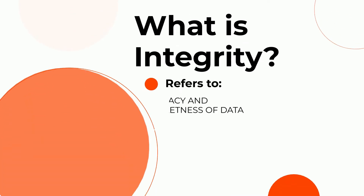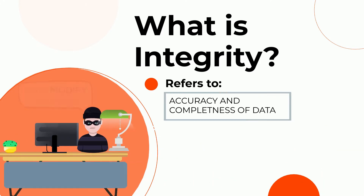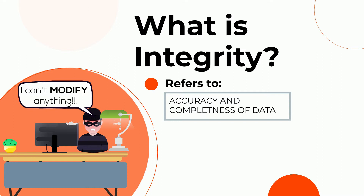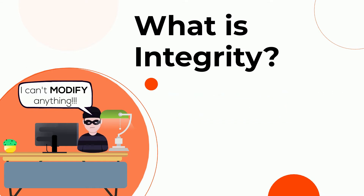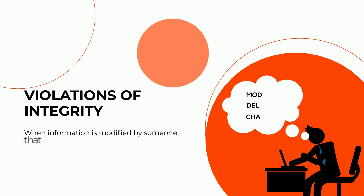Integrity refers to the accuracy and completeness of data. Safeguards should be put in place to prevent data from being modified by an unauthorized subject. Anytime information is modified by someone that isn't authorized to do so, whether it was someone inside the company or outside, it is a violation of the information's integrity.